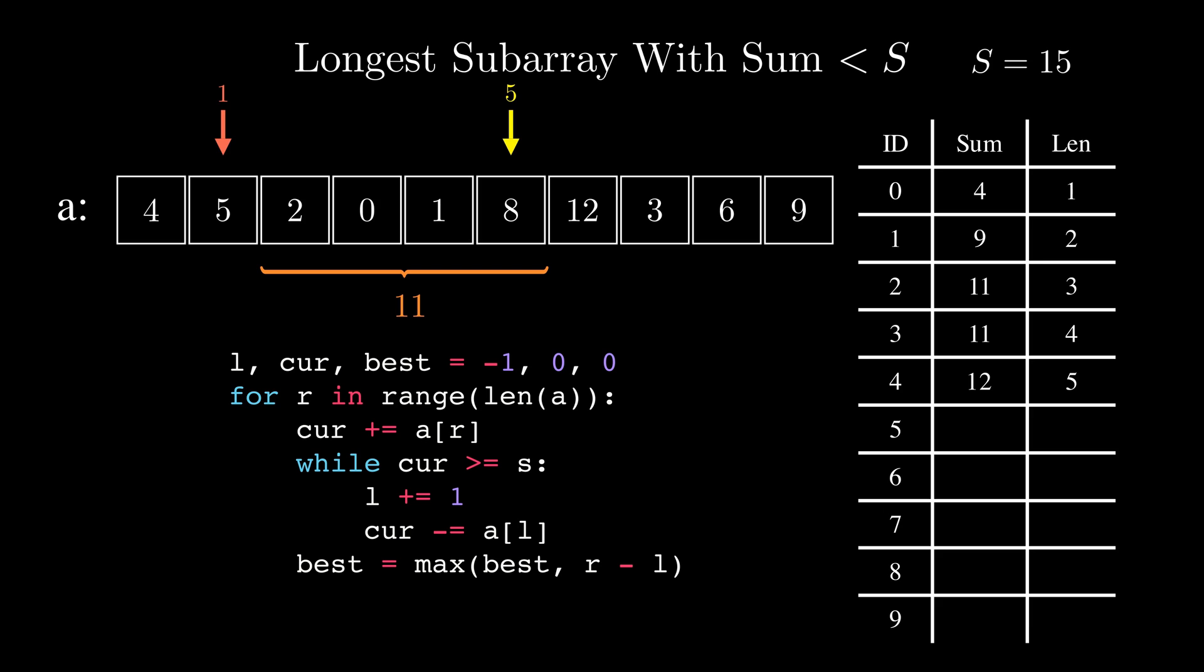After that we'll update the right pointer again and the sum will become 23. So we'll adjust the left pointer and the sum will first turn 21 then again 21 then 20 and then 12.